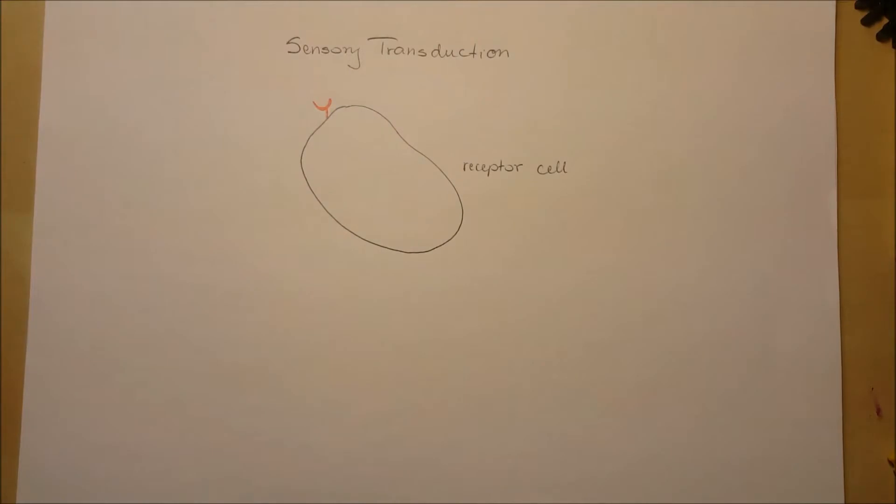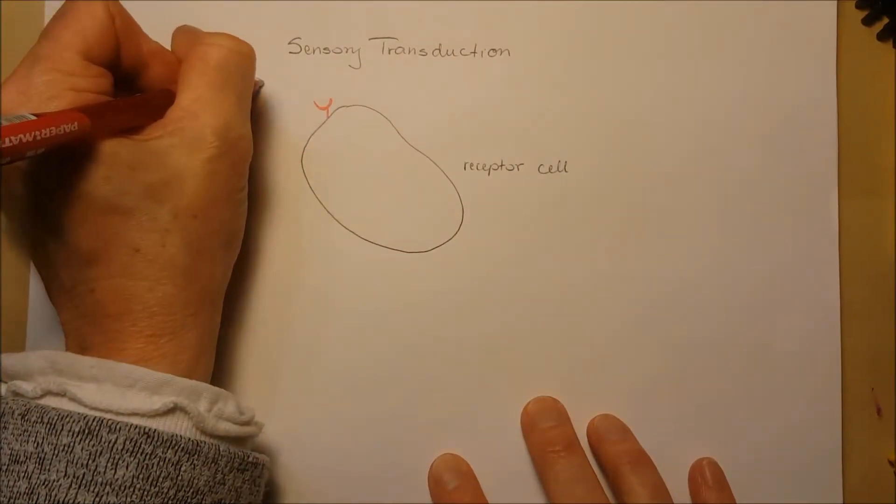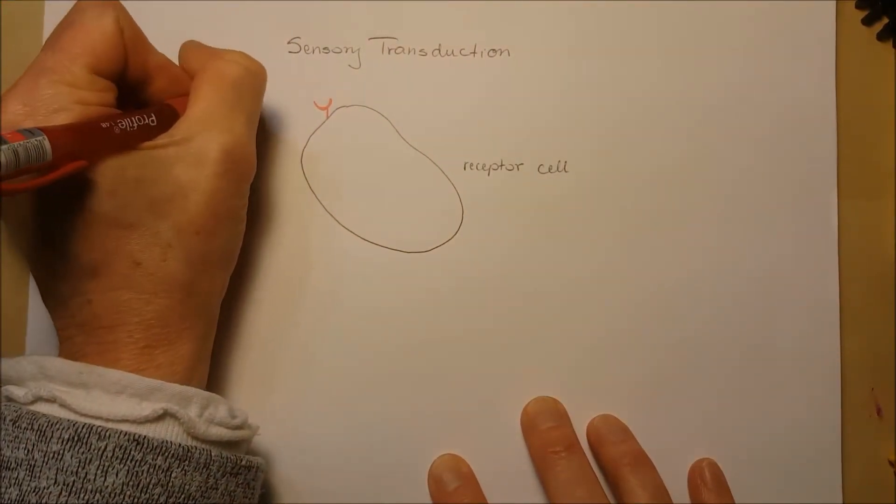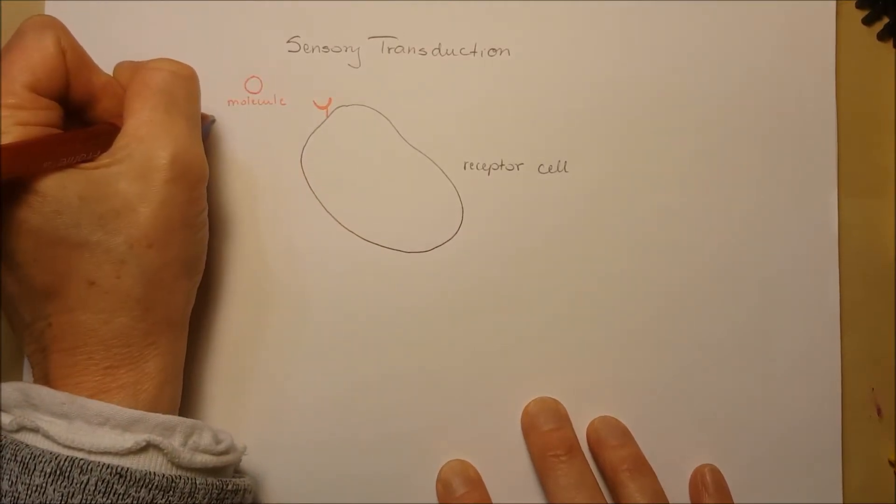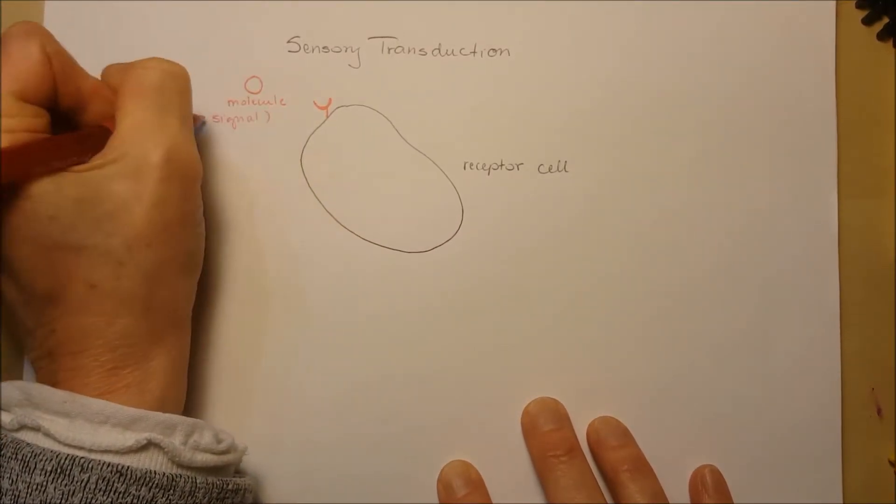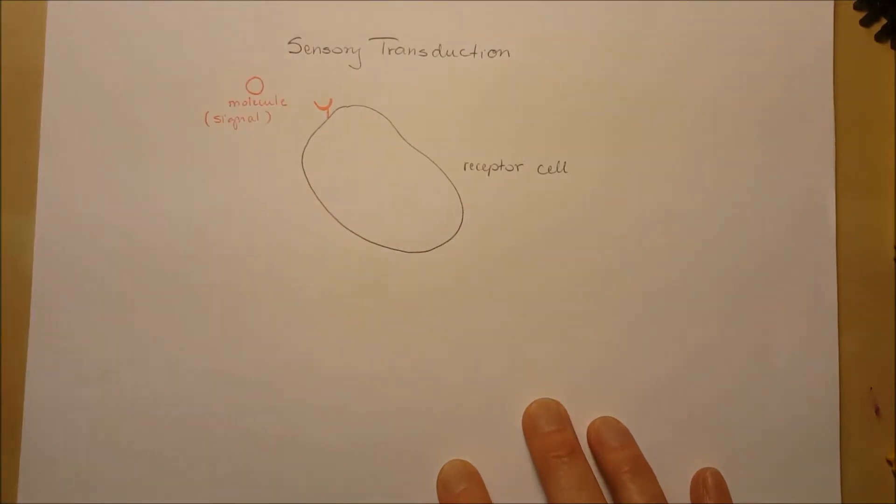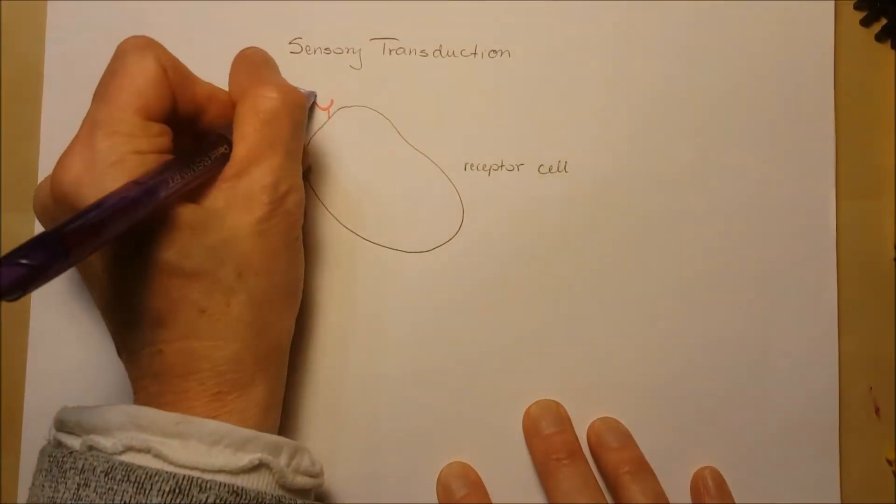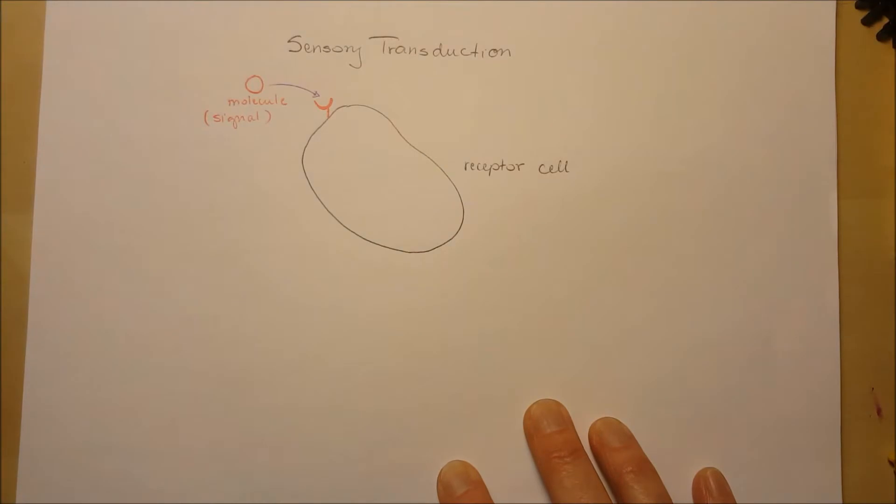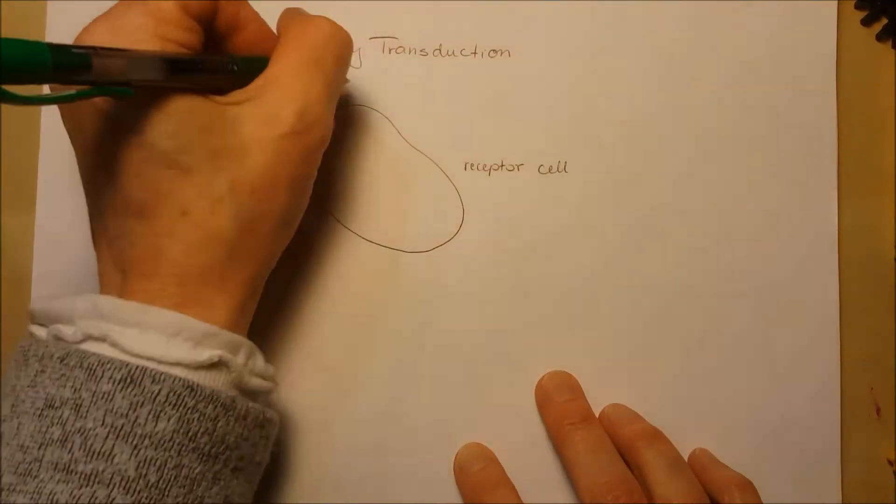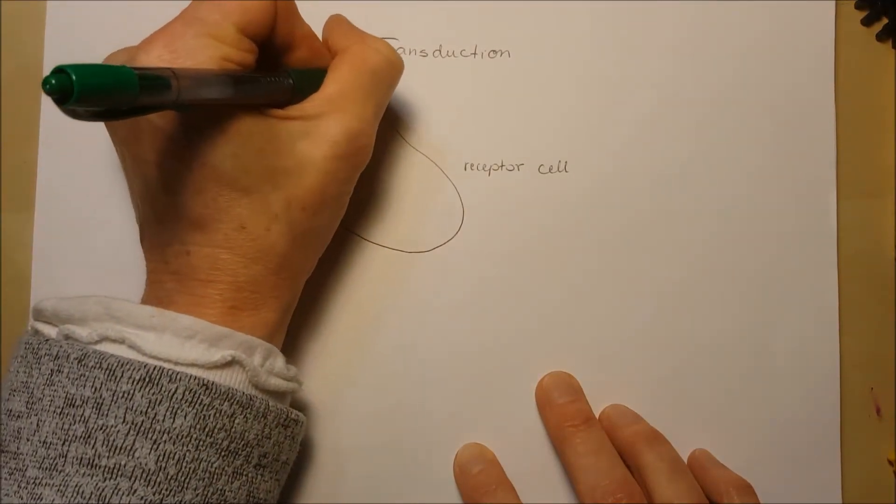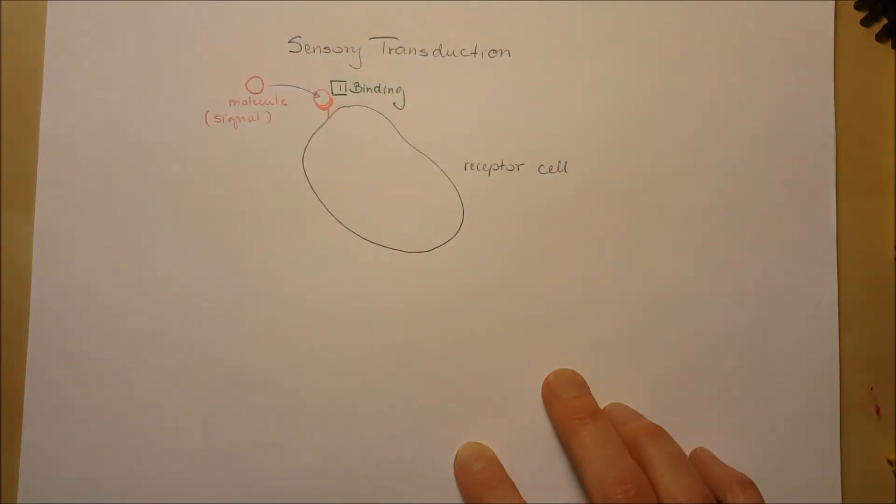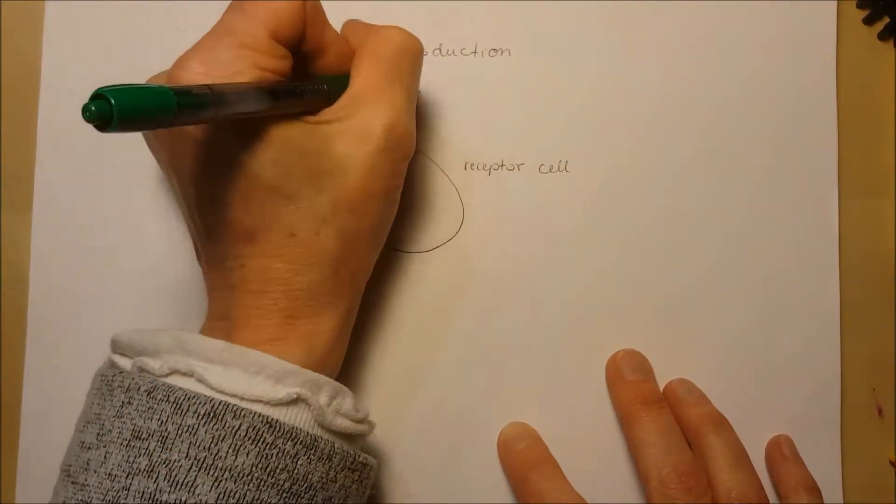On the surface of the receptor cell, we have a receptor that is specific for a certain molecule that acts as a signal. They will bind together and this will be the first step in sensory transduction: the binding, when the receptor receives the signal molecule. The binding is also called sensory reception.